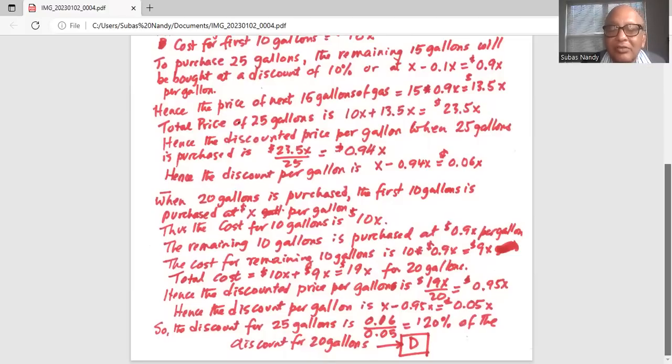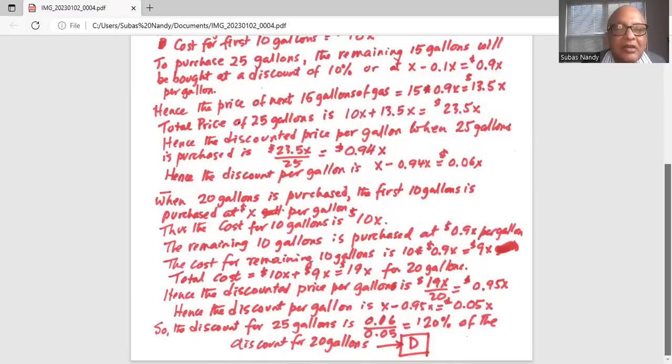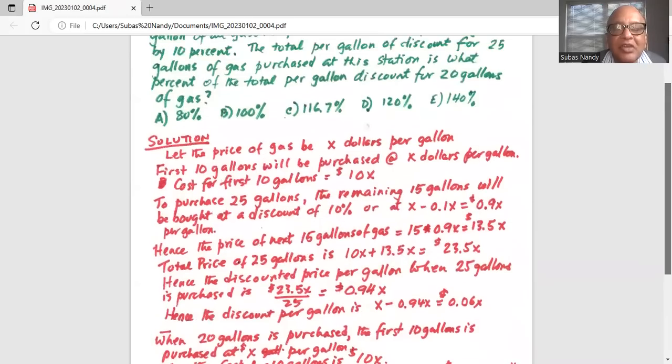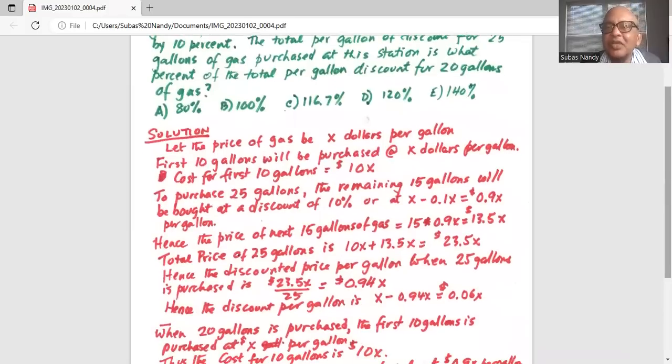So if you purchase 25 gallons you get 120% of the discount that you got for 20 gallons. So the correct answer choice is D as in David, which is 120%. So I will stop here today.